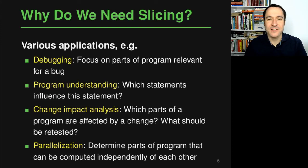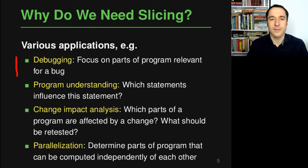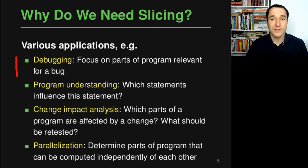So now you might say, well, that's a nice idea — you can reduce a large program to a small program — but why do we actually need this? Slicing has a lot of interesting applications. Here I list four of them to give you a feel for what one could do with slicing. The most obvious one is debugging: if you are interested in a particular misbehavior of your program, you want to know which parts of the program influence what you are seeing. If you know that at a particular point some variable has the wrong value, slicing can help you focus your attention on the relevant parts.